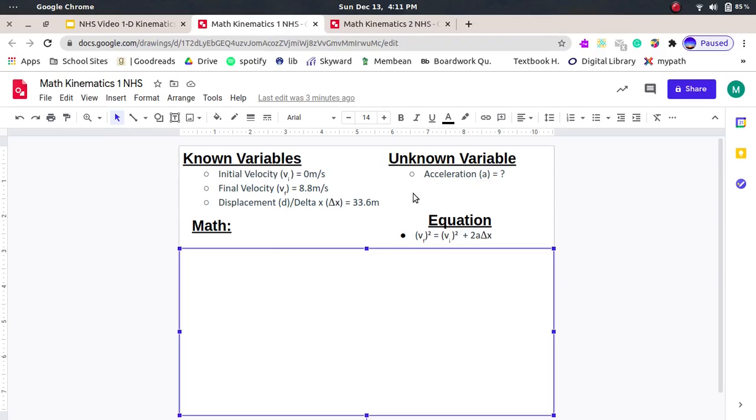Here, just to remember is our known variables, unknown, and our equation. So the very first thing we should do is plug in our known variables. So vf is 8.8, and then an equation says we have to square that. Our vi is 0, and our equation says we have to also square this, and then plus 2a times 33.6 because that's our delta x.